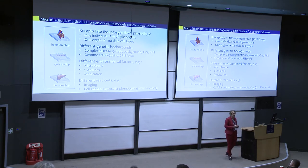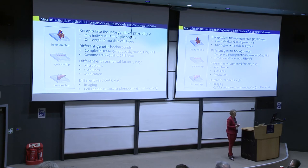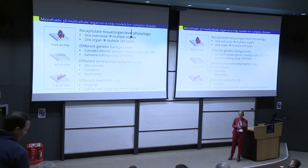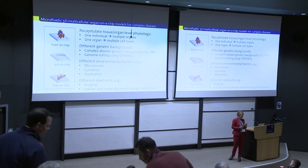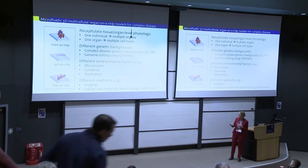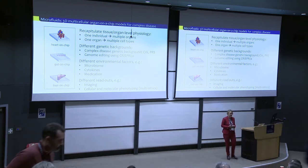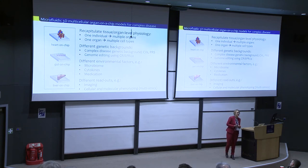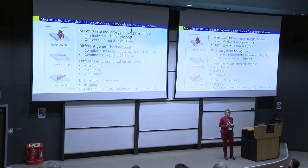You can also include different genetic backgrounds — either your common variants, your polygenic risk score, or you can do some genome editing. You can also change the environment by perturbing it with, for example, the gut microbiome, adding cytokines or medication, and in the case of celiac disease, we can add the gluten peptides. There are many different readouts you can think about — imaging, all the traditional cellular and molecular phenotypes — and in our consortium nanotechnologists are building in sensors so you can really follow signal transduction.